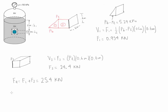Now we need to determine the resultant location, the value of yR, for the force. We need to find that value for each one of the sections and then find it for the total geometry. For the triangle, the location is at the centroid, which is located at one third from the base.